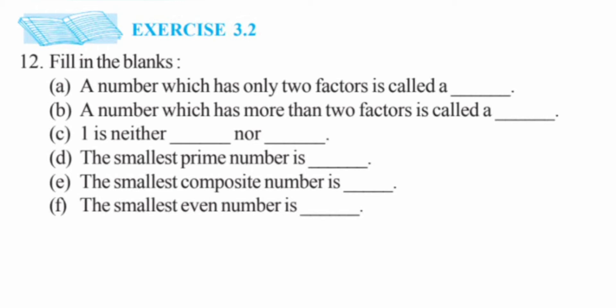Let's start with question 12, fill in the blanks. The first one: a number which has only two factors is called what? A number which has exactly two factors is called prime numbers, so let's write that answer down.